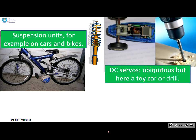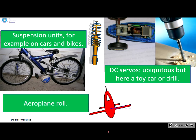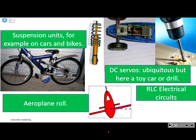DC servos, and here you can see an example from a toy or an electric drill. Aeroplane roll is in the additional resources. RLC electric circuits, which are a very common second order model.